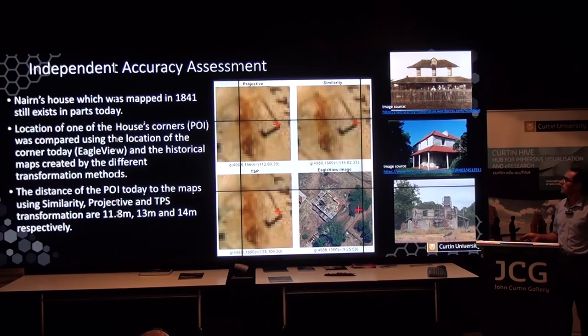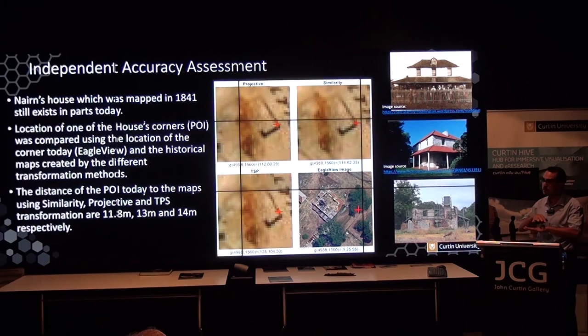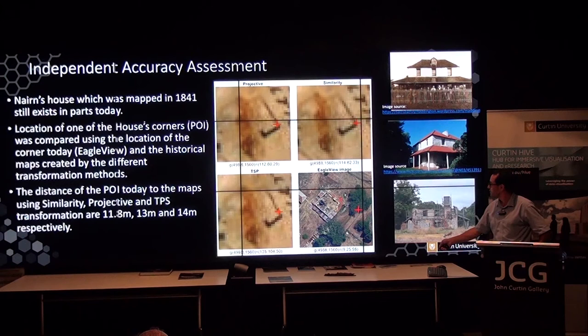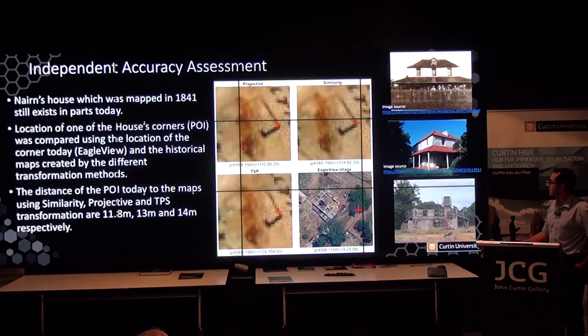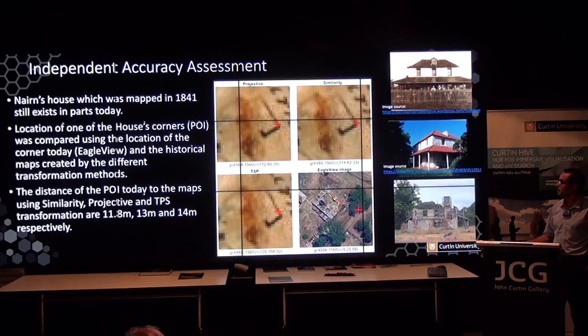For independent accuracy assessment, we overlaid the historical maps generated using the projective technique, the thin plate spline method, and similarity. We found a building that existed 200 years ago, appears in the historical map, and is still visible in aerial view today — and this building here corresponds exactly to the building here. Measuring the distances from the corner of the building to its position in all three georeferencing methods: 11m (similarity), 0.8m (projective), and 13–14m (TSP). This shows that similarity generates more accurate results than the others.